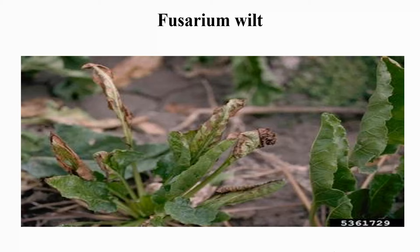Fusarium wilt is a fungal disease which affects the yield of cumin. Infected plants show peculiar symptoms of drooping of leaves leading to mortality of the entire plant. Attack of wilt is severe in younger plants. There is no chemical control for this disease.